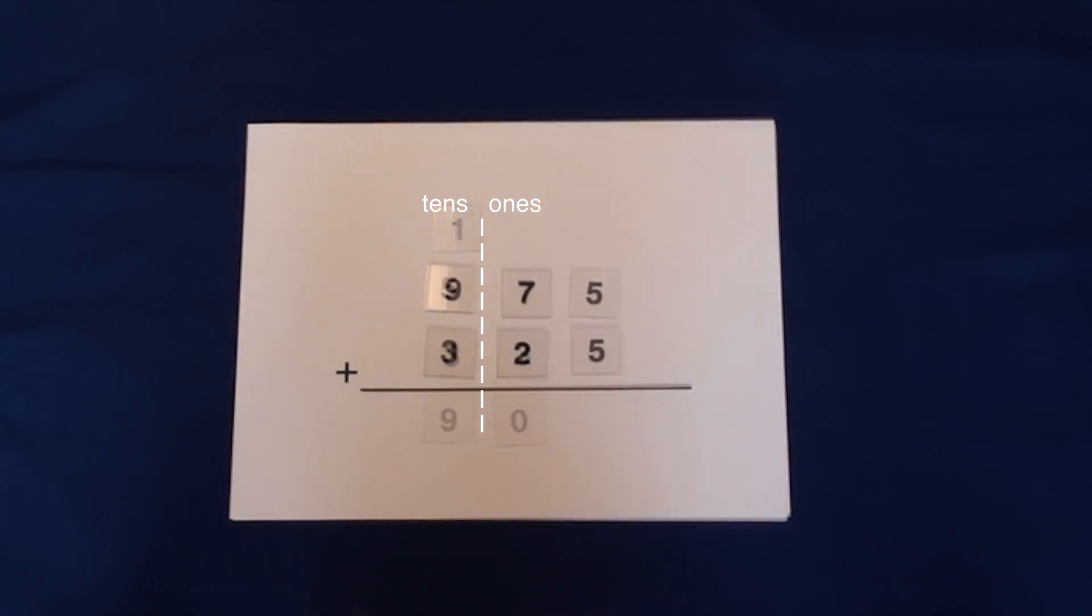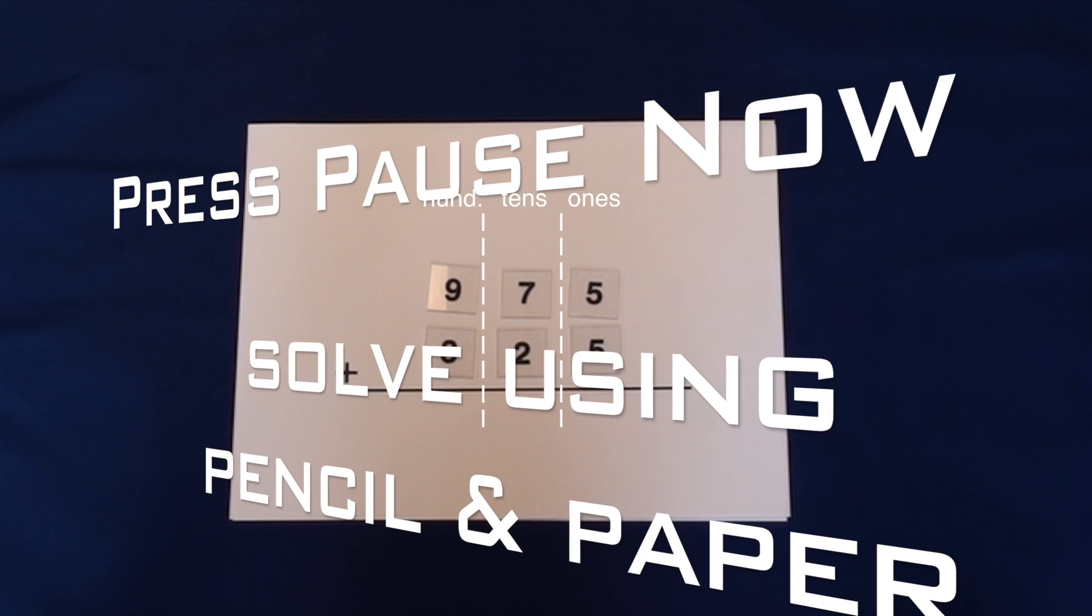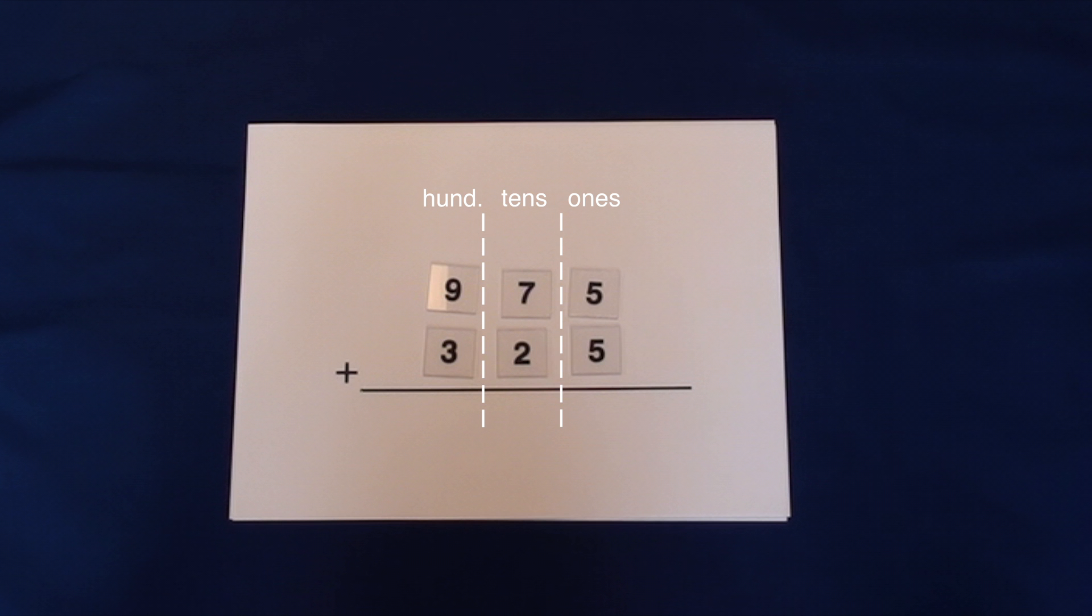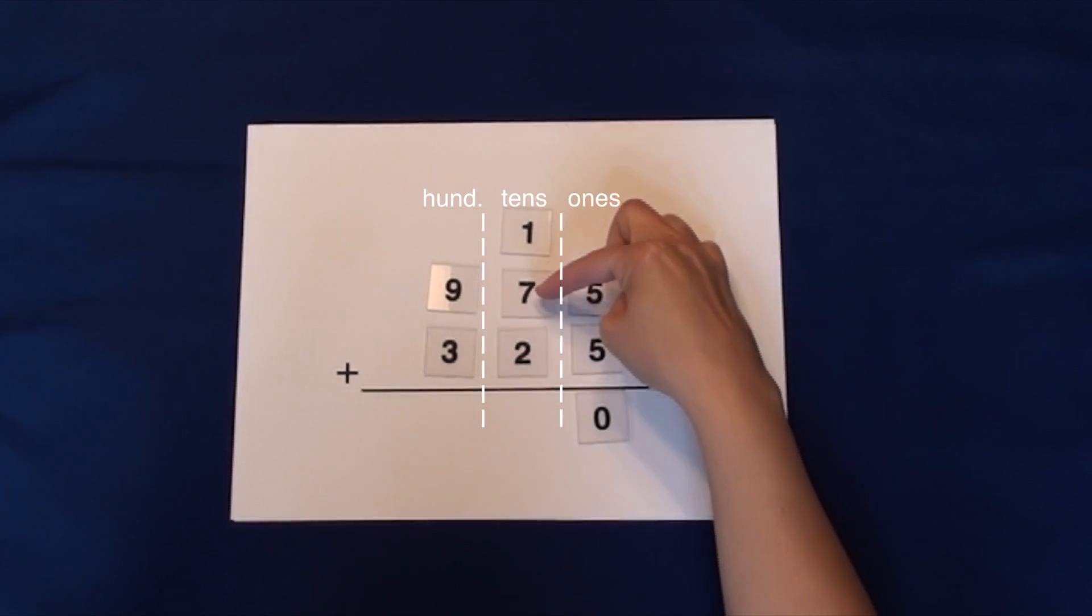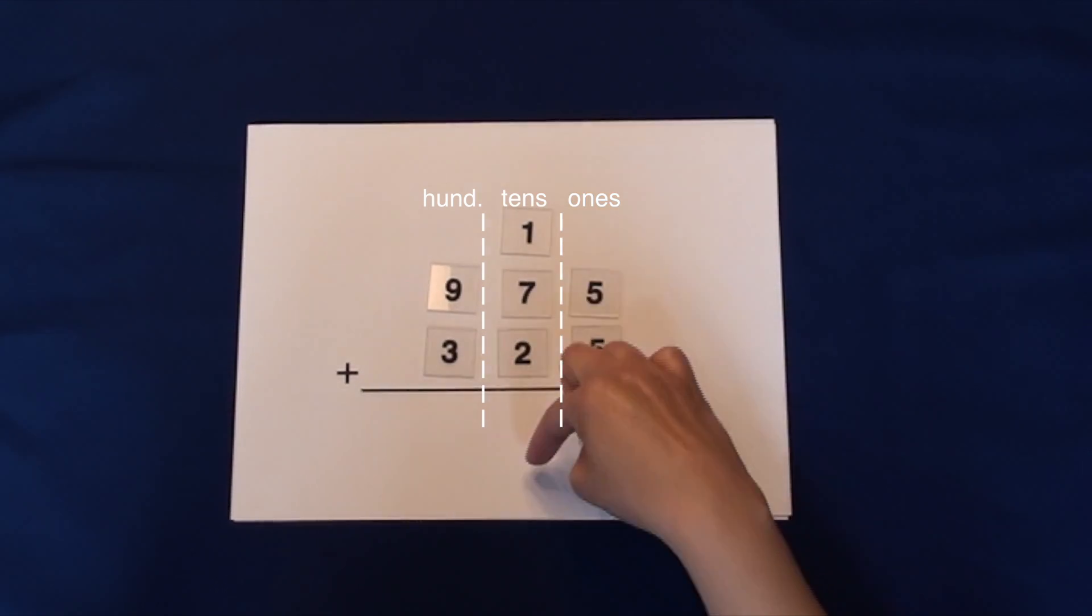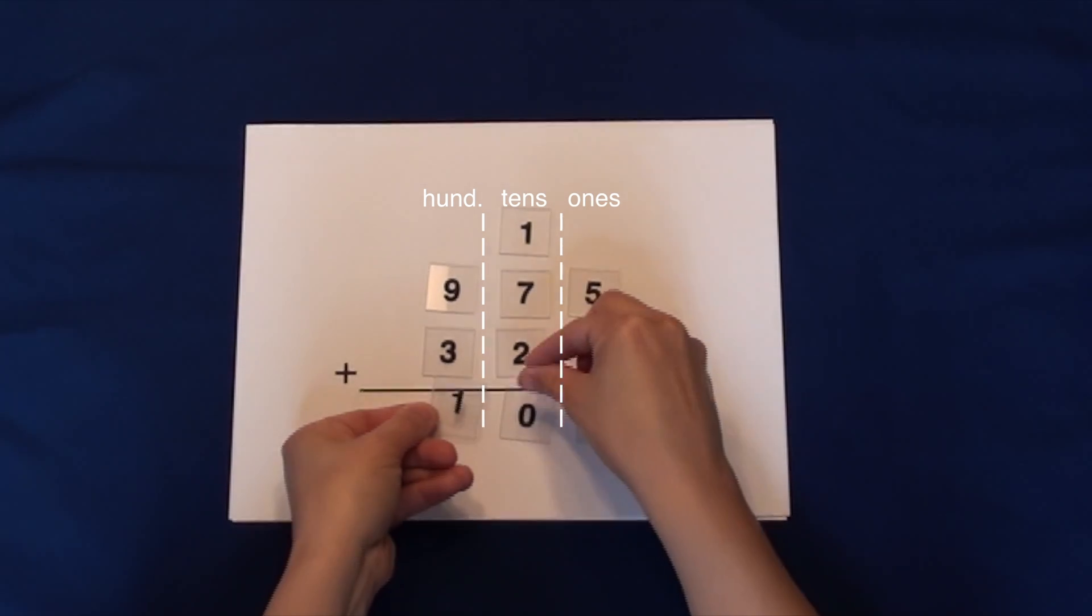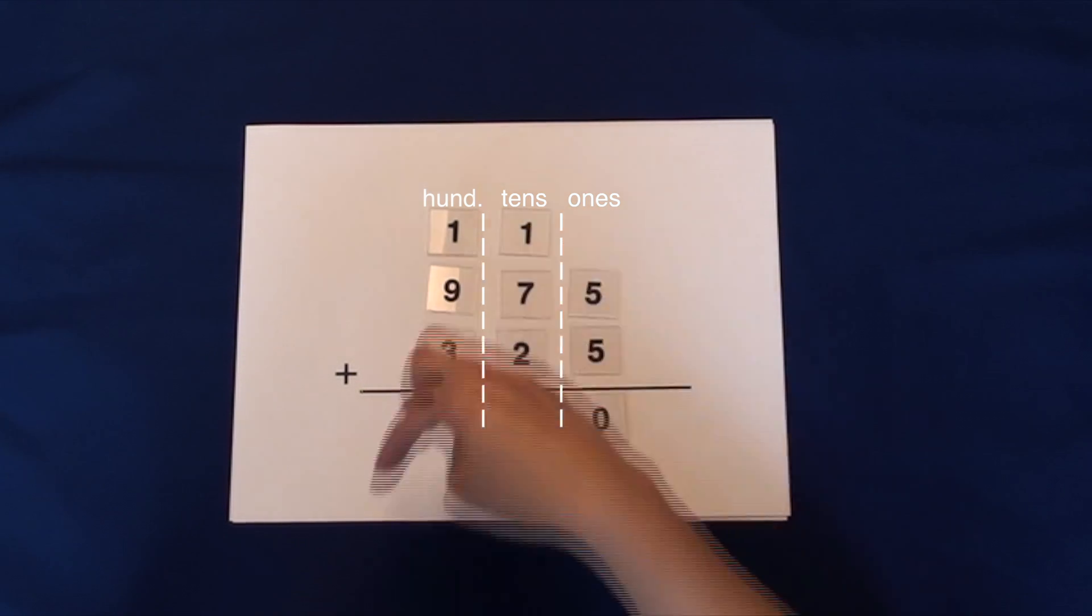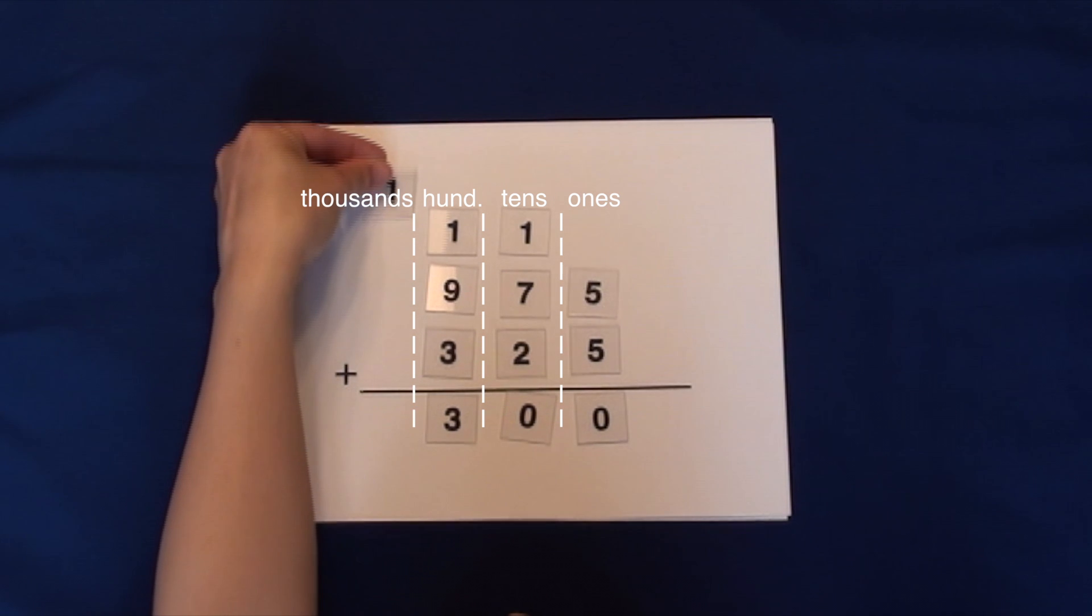On to 3-digit addition. 5 plus 5 equals 10. 1 plus 7 plus 2 equals 10. 1 plus 9 plus 3 equals 13. Our sum is 1,300.